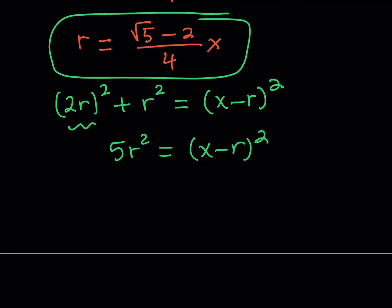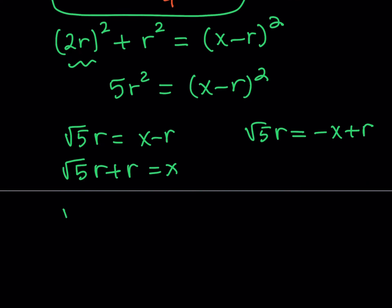I'll take into consideration the fact that the lengths all have to be positive. If you take the square root, you're going to get the square root of 5r equals x minus r. Or square root of 5r is just the opposite of x minus r, which is negative x plus r. I can write it and factor it. Square root of 5 plus 1 times the quantity r equals x. And then r from here is going to be x over square root of 5 plus 1.